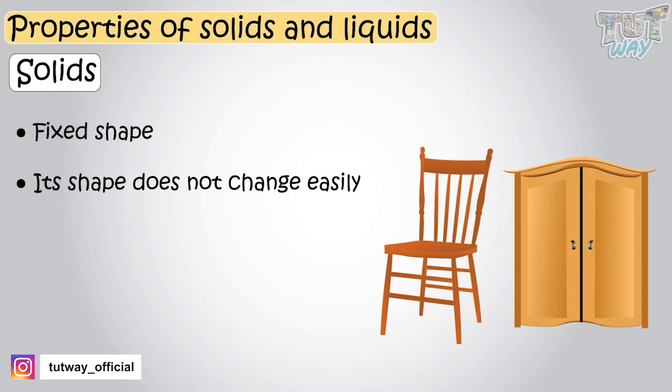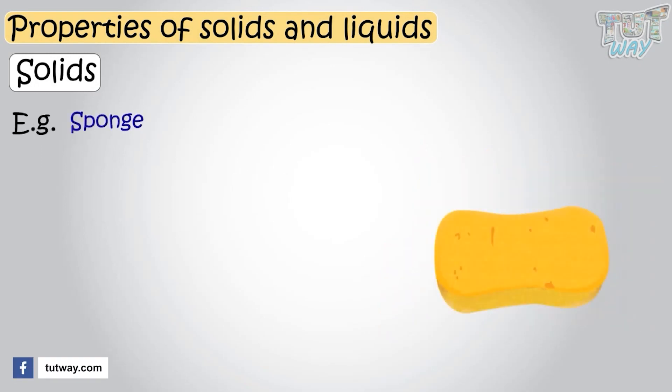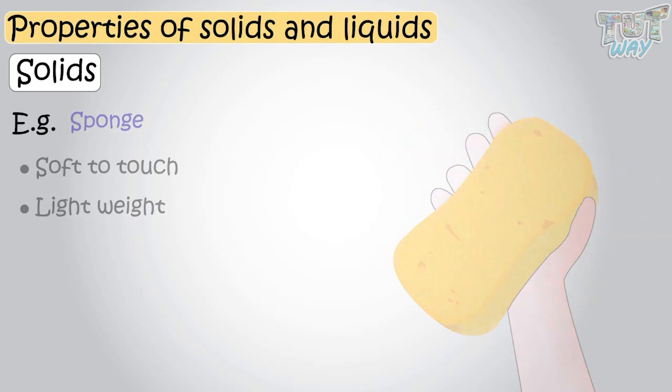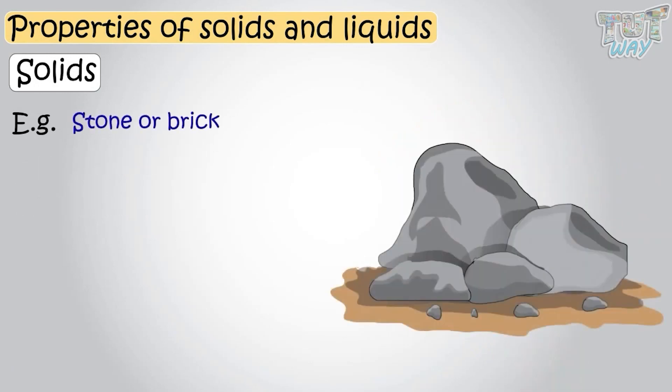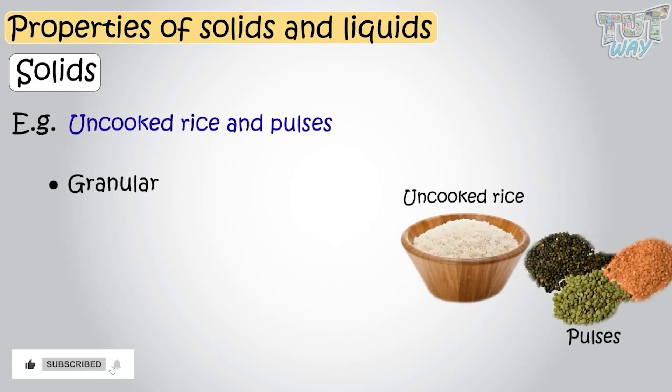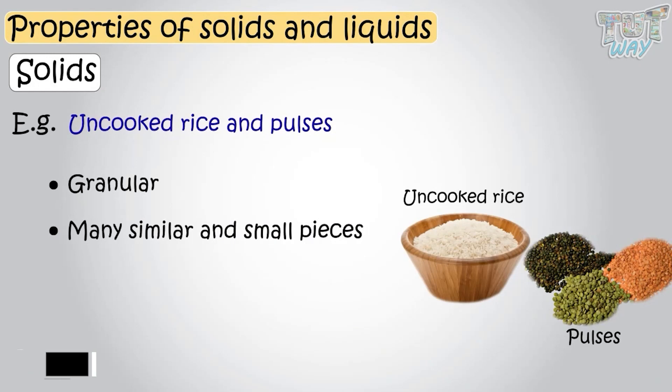Like a sponge is a solid which is soft to the touch and very lightweight. Other solids like stone or bricks are very hard to touch and very heavy to pick up. Uncooked rice and pulses are solids that are granular, that they have many similar and small pieces.